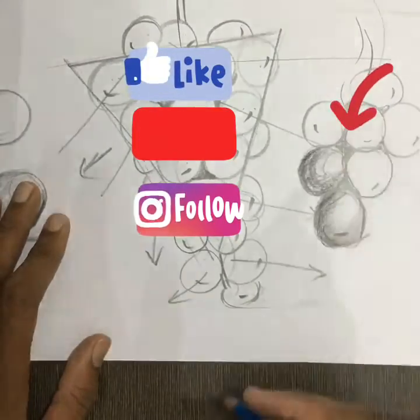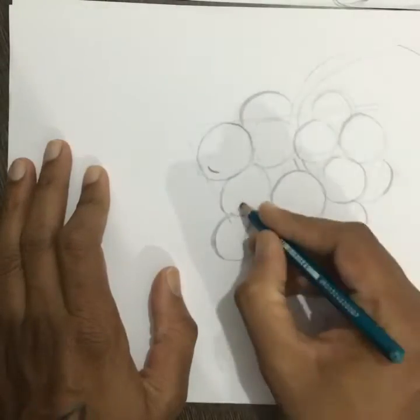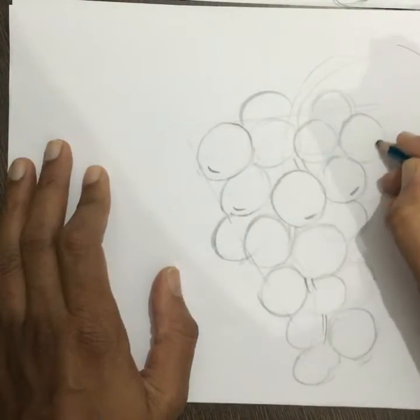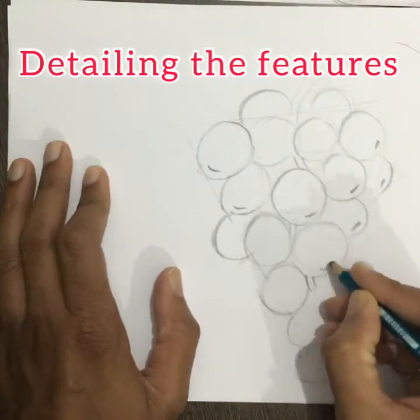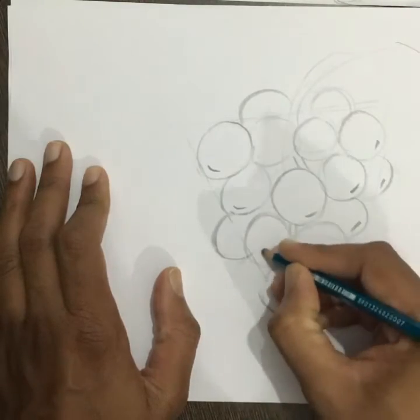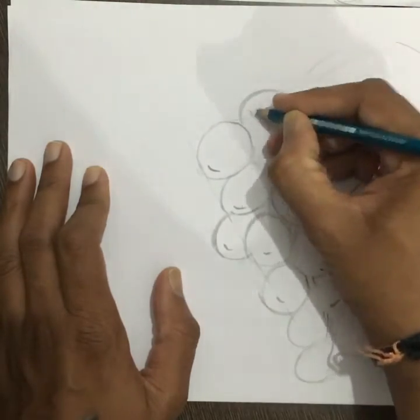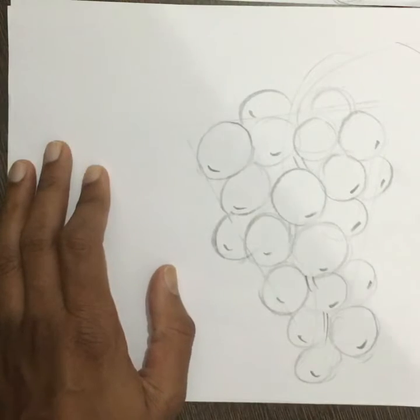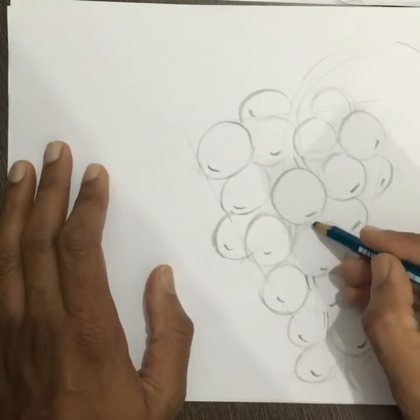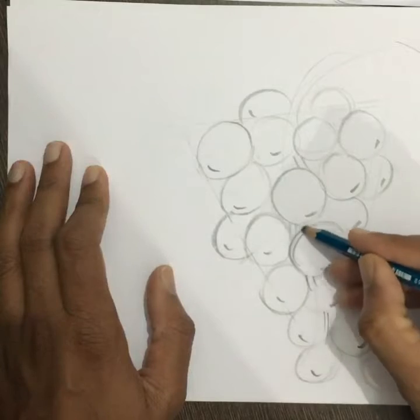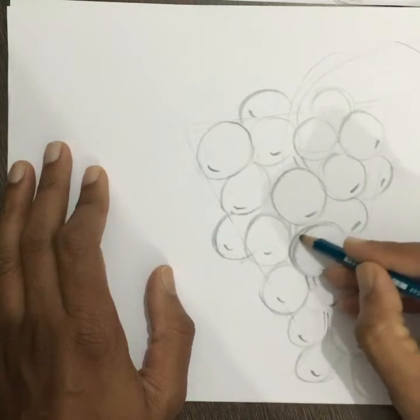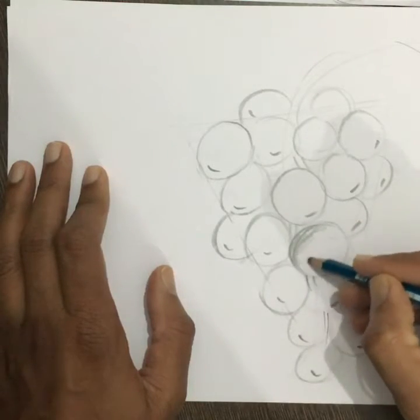Just for a sample, I am just shading here on the grapes. Then outline and shading. So one by one, I am going to time lapse.